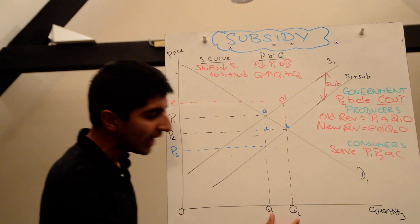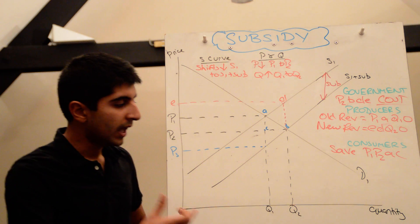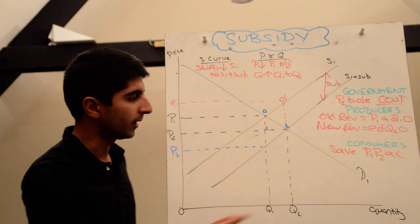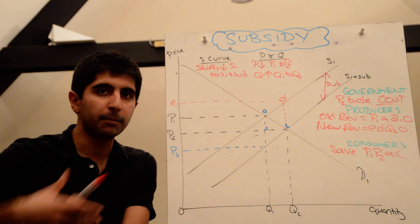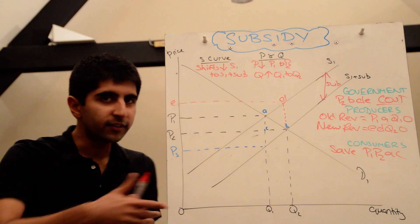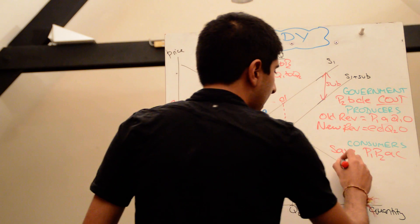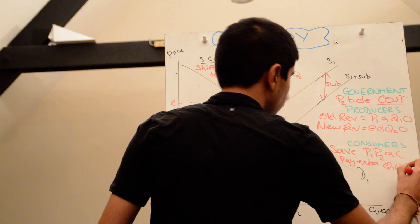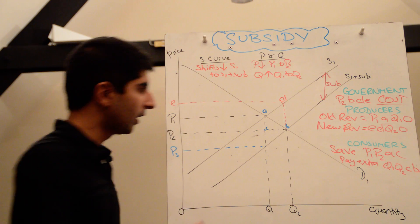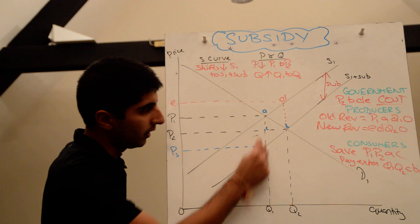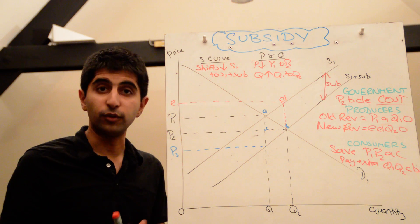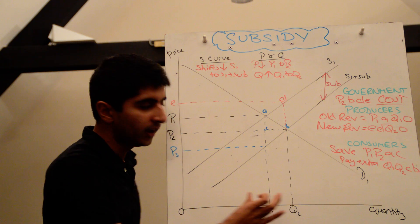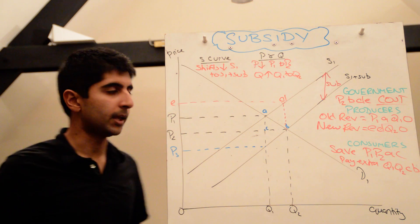But bear in mind as well that extra units are being sold and being produced. And the consumer is paying more for those units. They're paying P2 for Q2 units here. So the difference in Q1 and Q2 are the extra units being bought by consumers. They're paying P2 for that. There is an extra cost there. So consumers pay extra. And the exact amount they pay extra is a little rectangle of Q1, Q2, CB. So this little rectangle here is the extra that consumers are paying. And that's all going to producers as well. So producers not only get the subsidy value, but also get the extra revenue that consumers are paying for these extra units that are being produced as well.